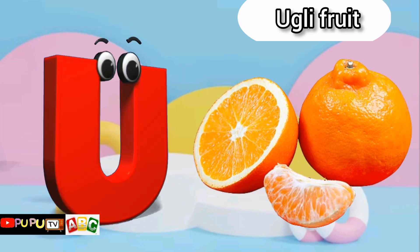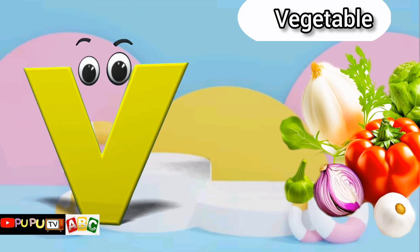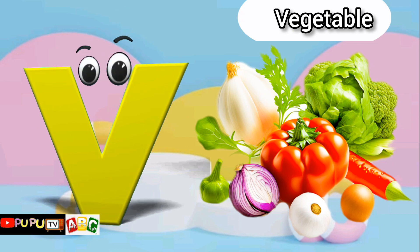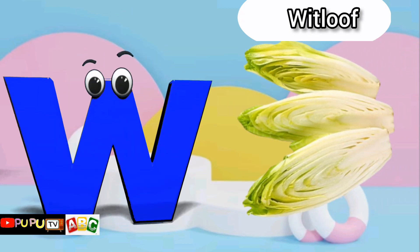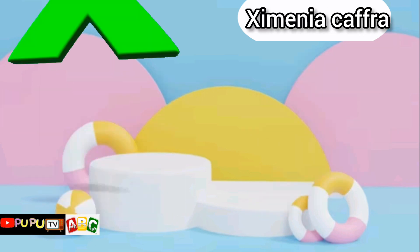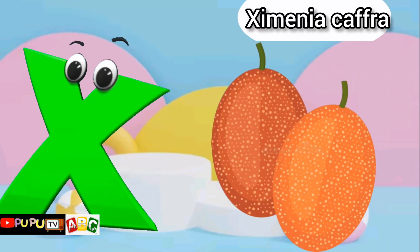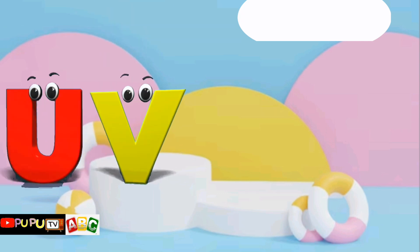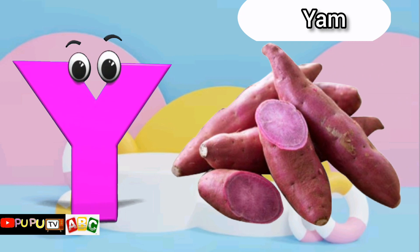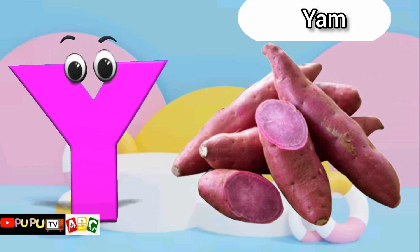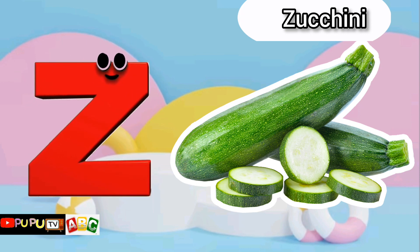U is for Ugly Fruit, Ugly Fruit. V is for Vegetables, Vegetables. W is for Whitloaf, Whitloaf. X is for Zymenia Caff, Zymenia Caff. Y is for Yam, Yam. Z is for Zucchini, Zucchini.